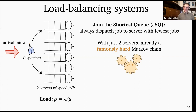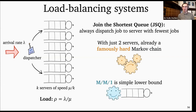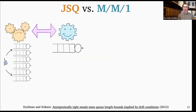JSQ is a complex system, so we might think: what's an easier system to compare it to? Continuing a theme from yesterday, we're going to compare to a single-server system with the same total capacity. In this case, an MM1 with one server of speed μ and the same arrival rate λ is a simple lower bound — the MM1 is strictly more efficient than the JSQ system. So the big idea is to couple this JSQ system to the MM1 system.